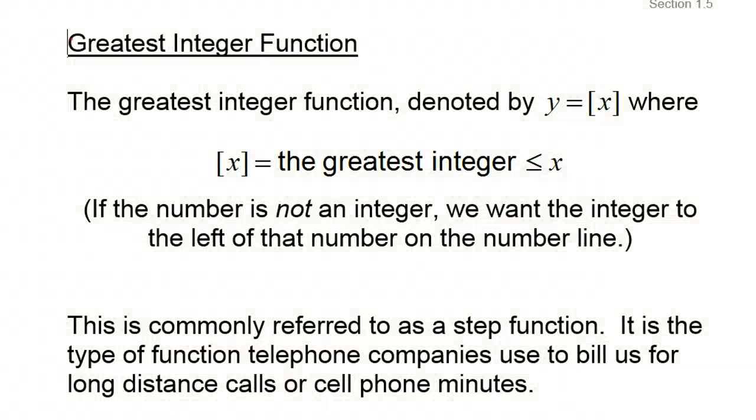This next function is a little different than anything you've seen. It's new. It's called the greatest integer function. Notice that it has a little bit different type of representation. It's got square brackets around the x. And when you see that, what it means is whatever number you have in here, we want the greatest integer that's as big as x or equal to x. So if the number's not an integer, then we want the integer to the left of that number on the number line. And that's the easiest way to explain it.